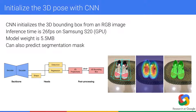The first step is 3D detection. We use a deep neural net to initialize the object's pose — meaning its rotation, translation, and size — and estimate the 3D bounding box. This model is very lightweight, about 5.5 MB, and can run at 26 FPS on flagship mobile devices. Depending on the application, the model can also produce segmentation and attention masks.